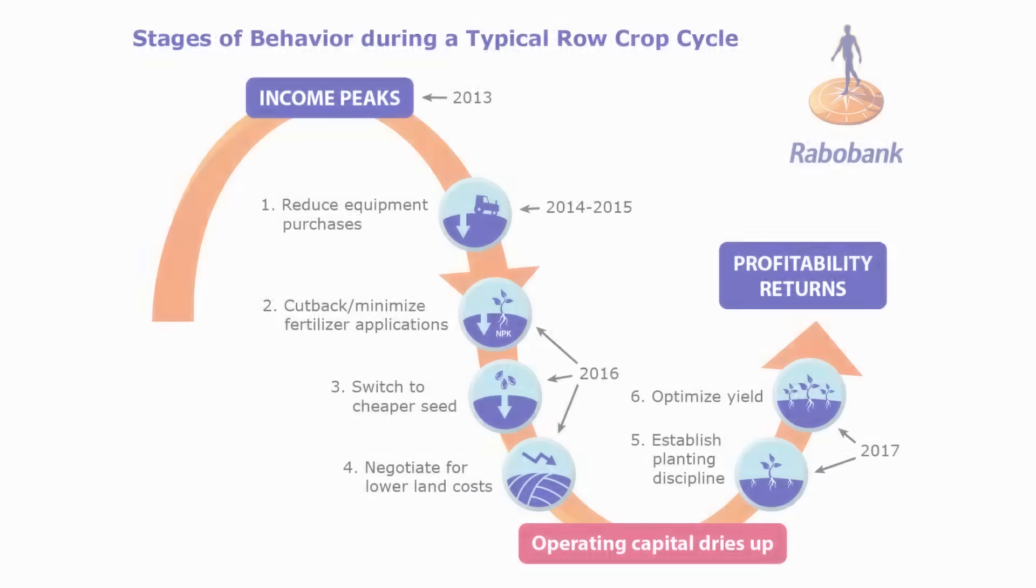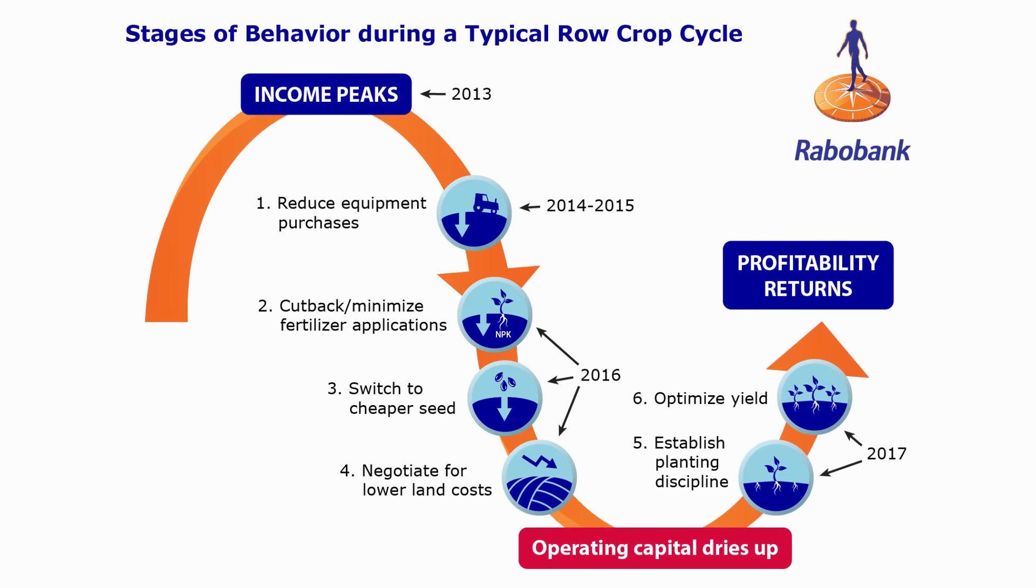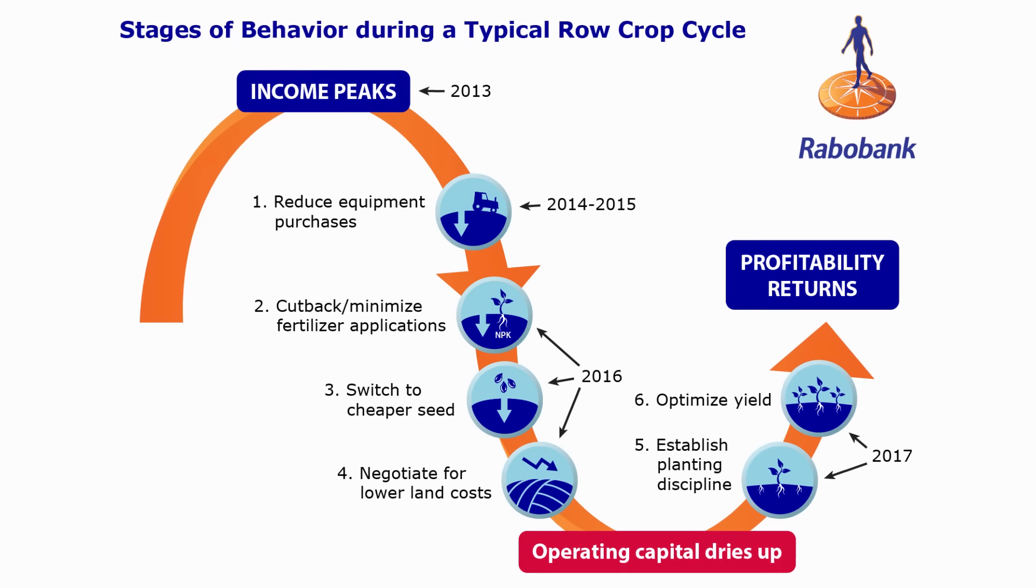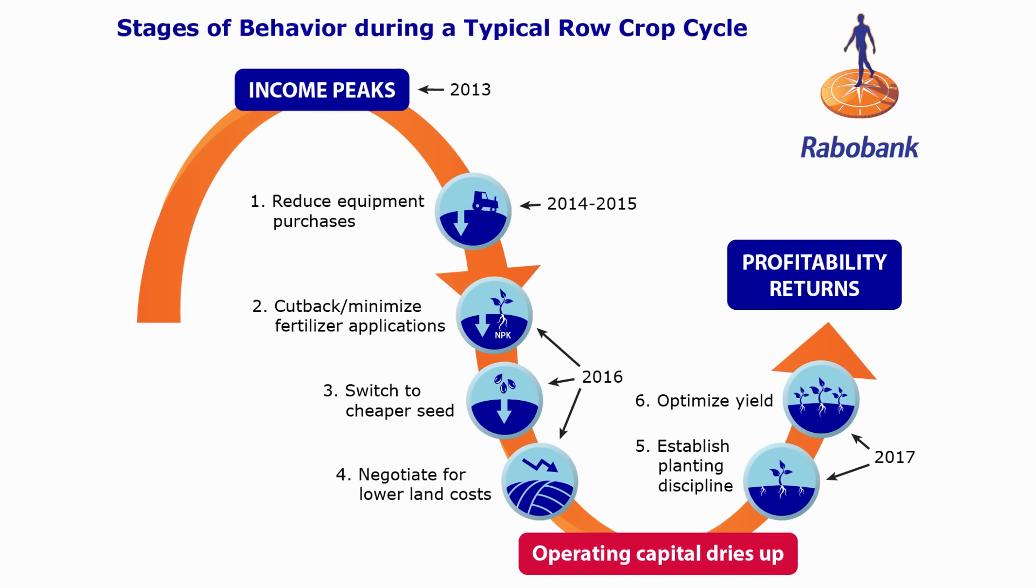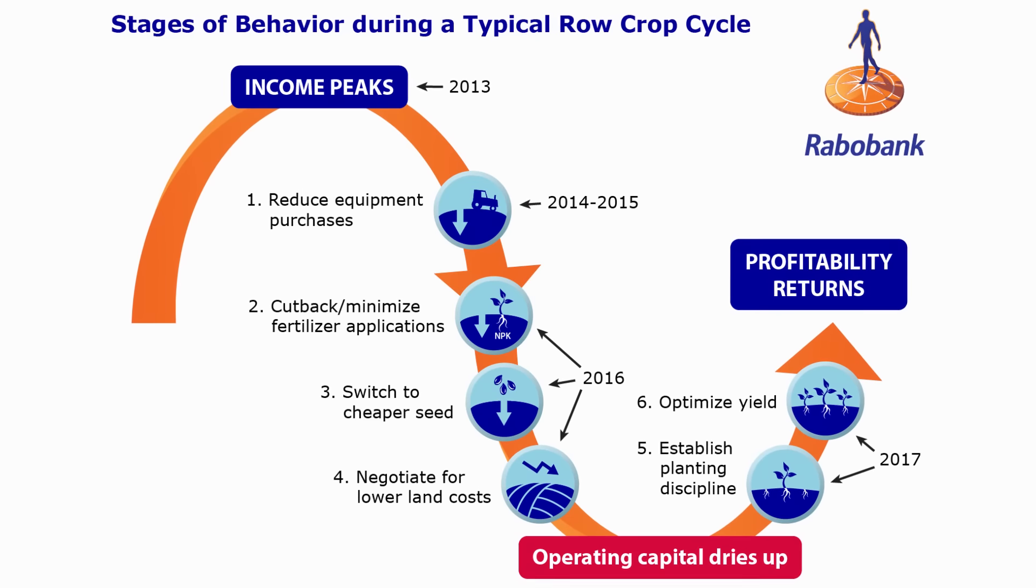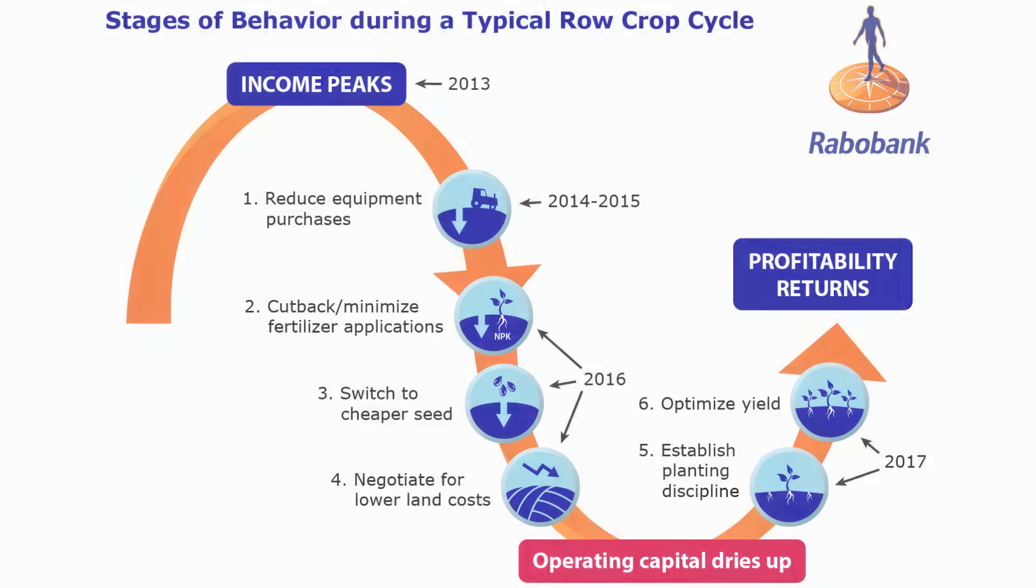I talked to both Rabobank and Farm Credit about what we're looking like in 2017 and beyond. I think folks at Rabobank think that this is the bottom we're hitting and we're going to be coming out of this come 2017. Folks at Farm Credit were a little less optimistic, probably another year or two. So no real consensus there, but it's interesting to have those discussions. I think in the next couple of years they're feeling like we'll come out of it one way or another.